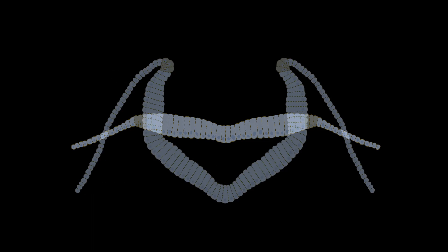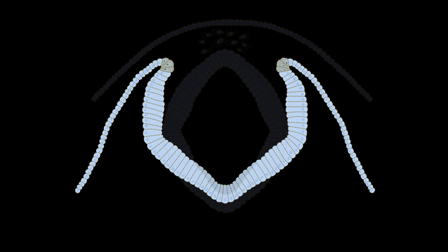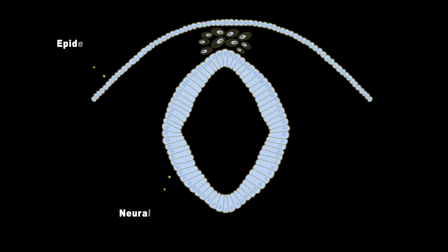The neural plate then folds laterally, giving rise to the neural tube. Additionally, during this process, certain cells separate from the neural tube and are referred to as neural crest cells.